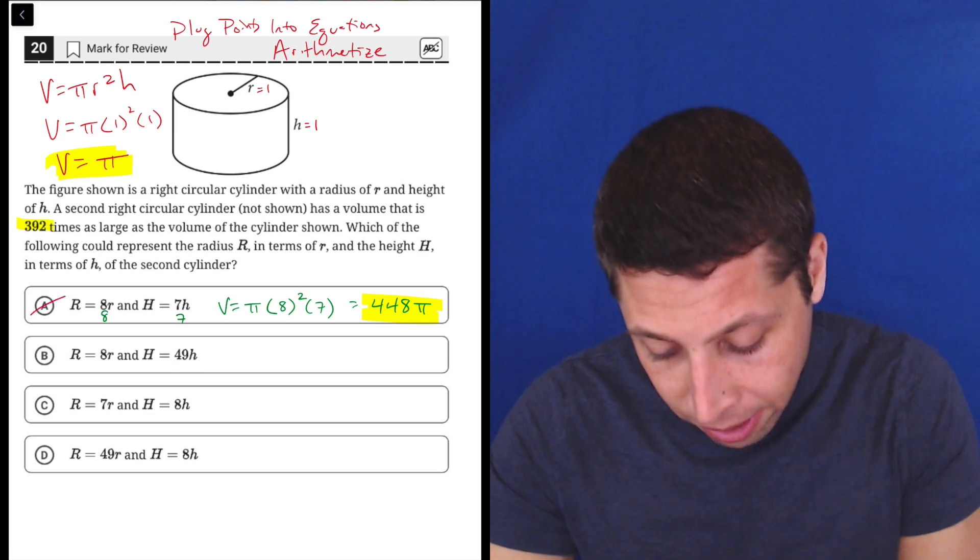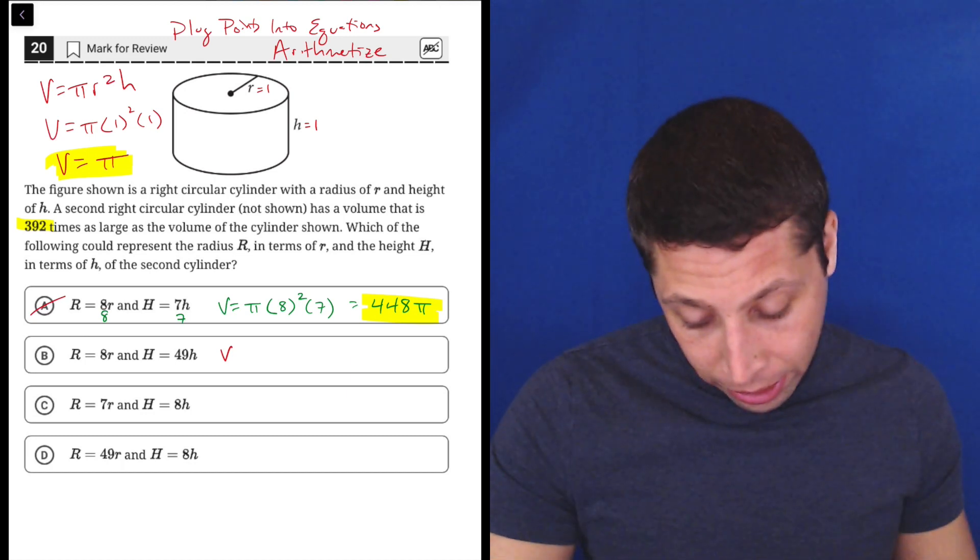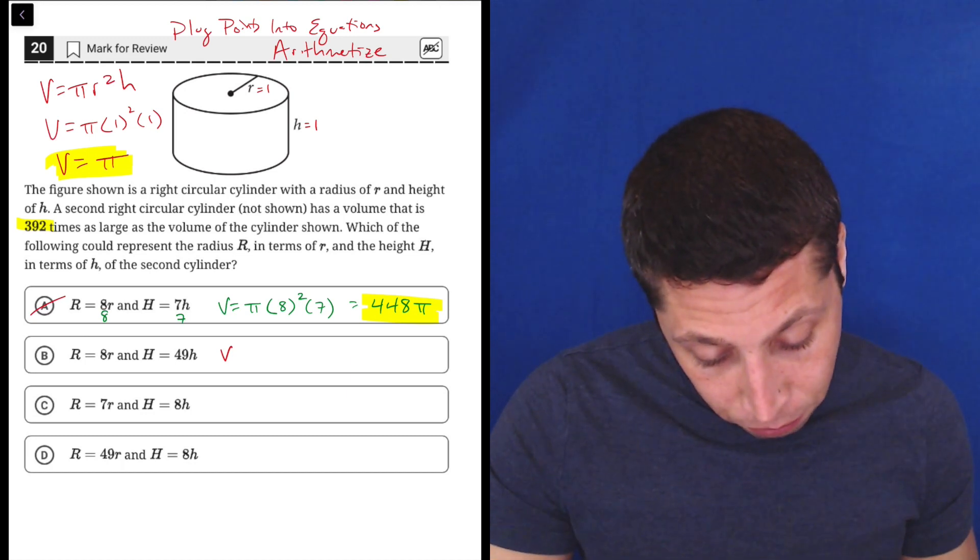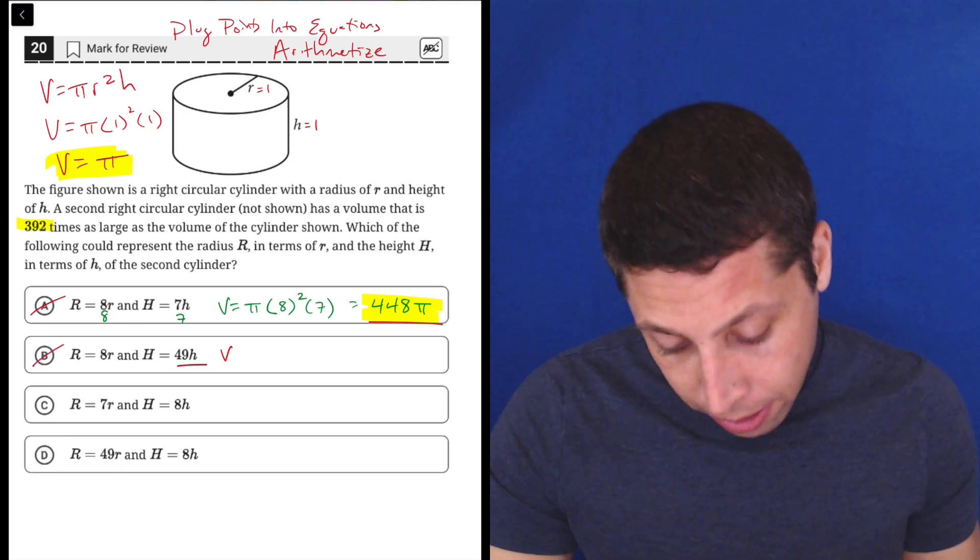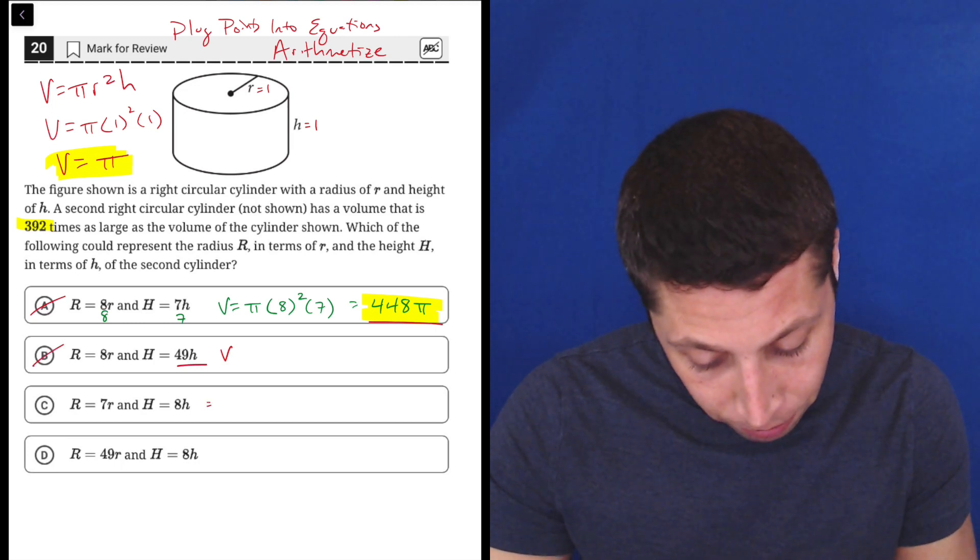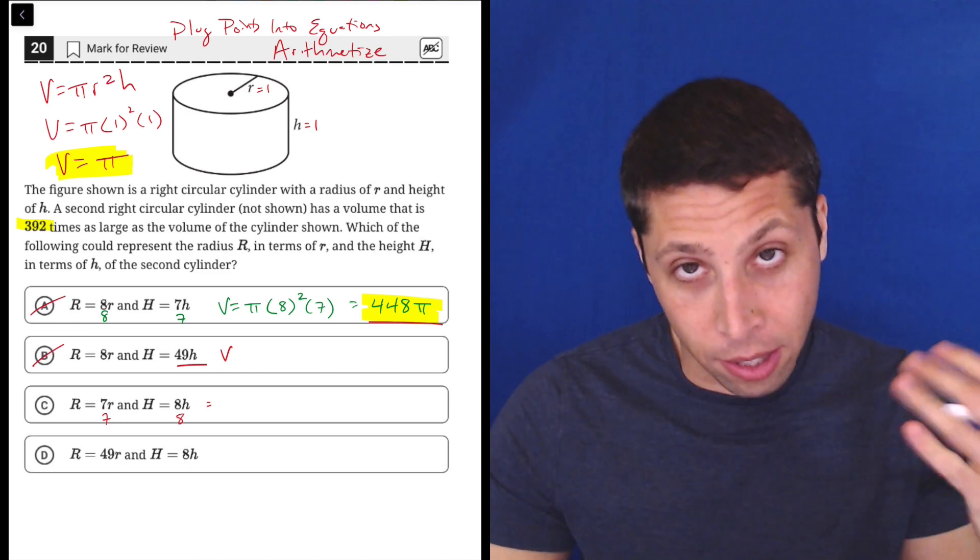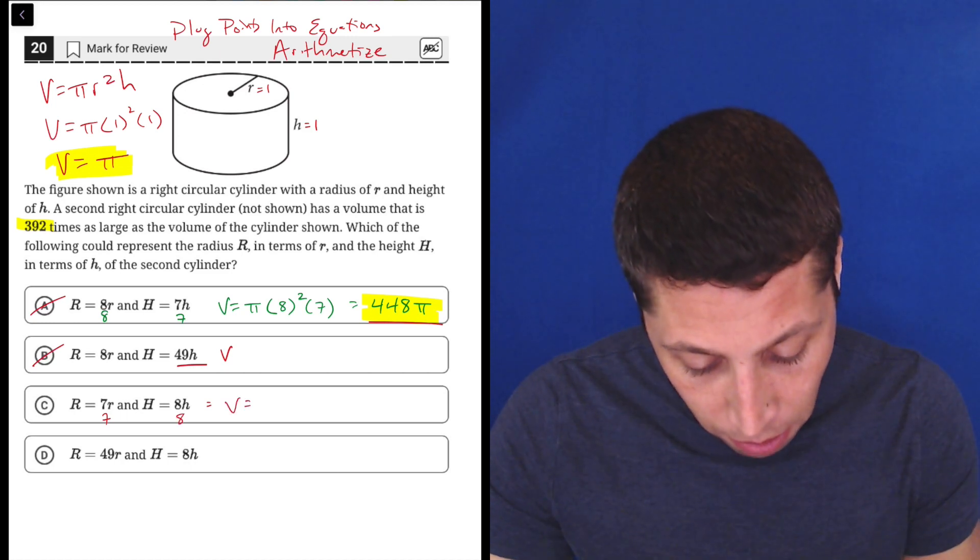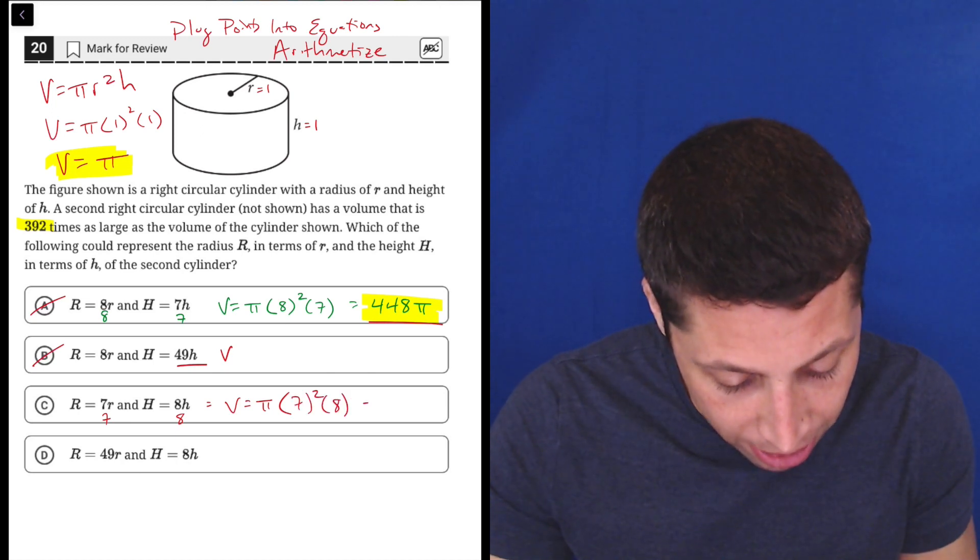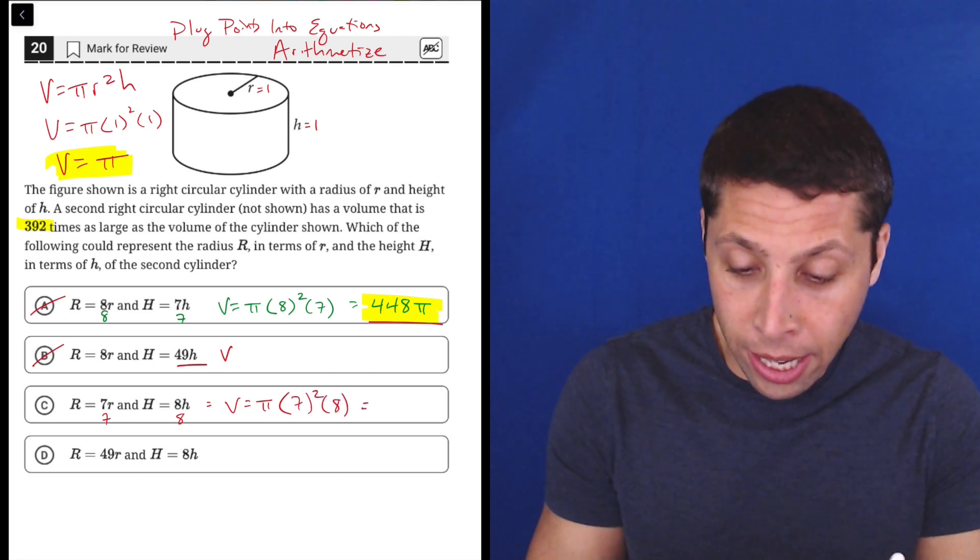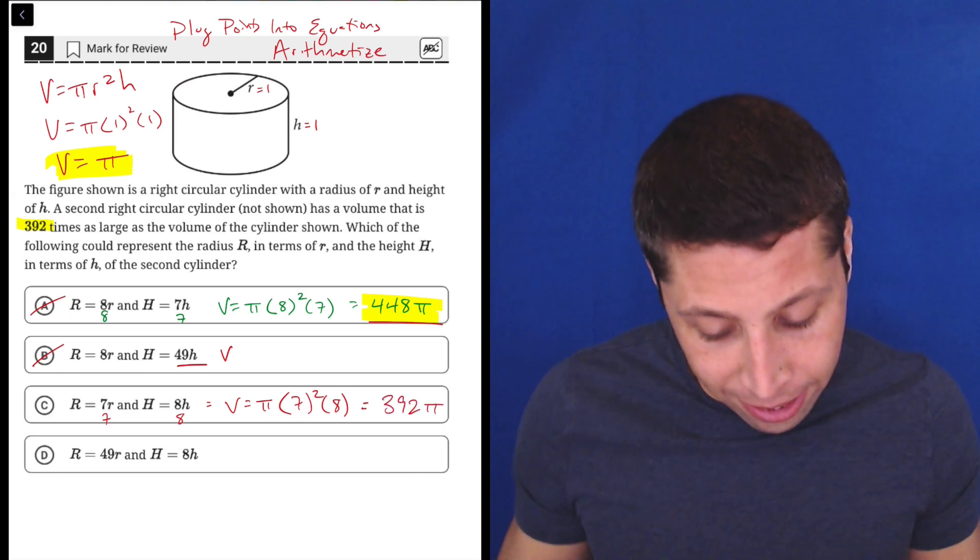So all we got to do is keep trying until we get some numbers that work. I don't think it's going to be B because if A is already too big and we make the height even bigger, that's not going to work. So let's skip right to C. So again, this is 7 times 1 and 8 times 1, because the R and the H were both 1. So the volume is pi 7 squared times 8. So 49 times 8 is, what do you know, 392.